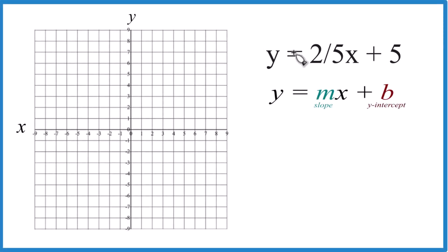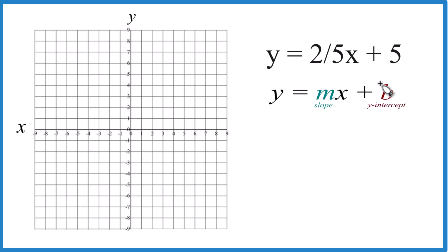So let's graph this equation. We got y equals 2 fifths x plus 5. We're going to use slope-intercept form — probably the easiest way to do that, especially when you have fractions like this.